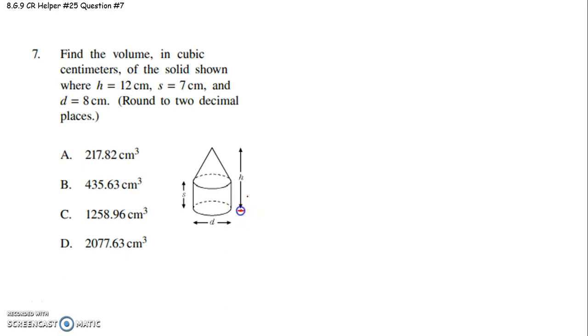where the height from the base to the very top is 12 centimeters. The height of just the cylinder is 7 centimeters. The diameter of the bottom circle is 8 centimeters. And then we're going to round to two decimal places.